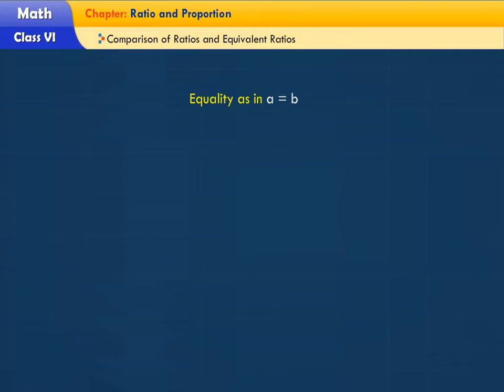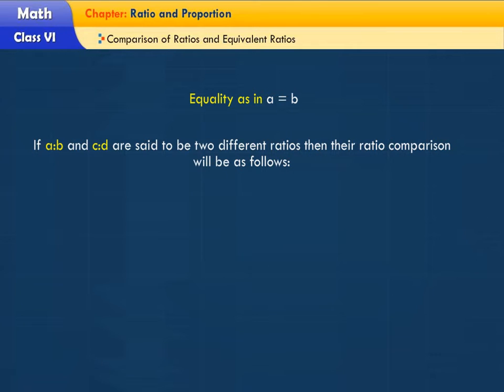Equality as in A is equal to B. If A ratio B and C ratio D are said to be two different ratios, then their ratio comparison will be as follows.